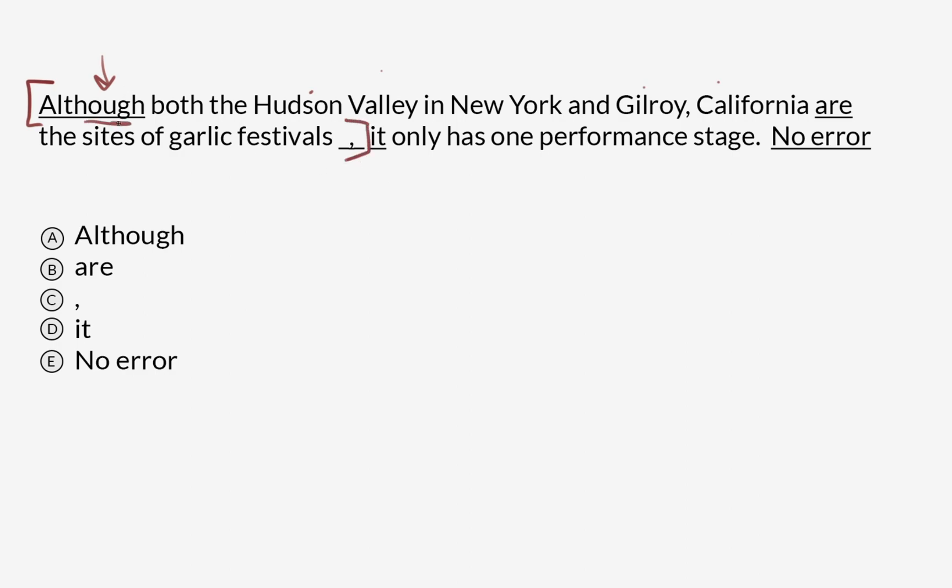This is okay if it's connected to an independent clause. We've got this other thing here: 'it has one performance stage.' This is an independent clause—it could be a sentence on its own. This is fine.